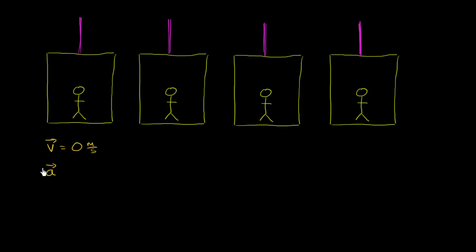Everything we're talking about in this video is in the vertical direction — that's the only dimension we're dealing with. So velocity is zero meters per second in the vertical direction, and the acceleration is also zero meters per second squared in this picture.